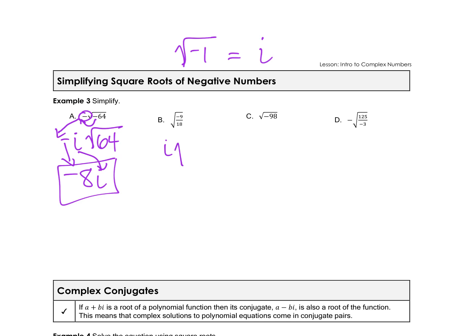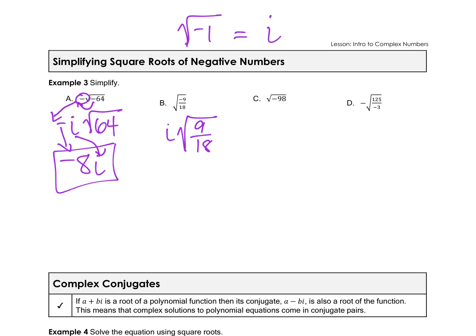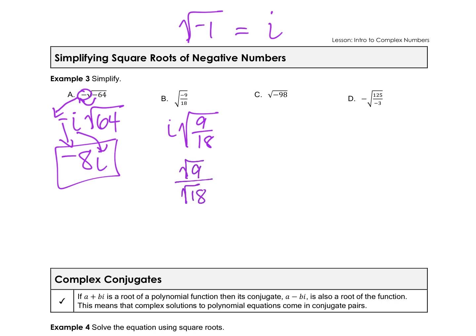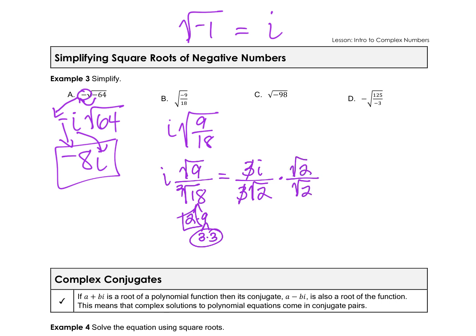For the next example with a fraction, bring out the negative as i. We can split the fraction into the square root of the numerator over the square root of the denominator. The square root of 9 is 3, so we have 3i on top. For the denominator, square root of 18 is not perfect — using a factor tree: 2 times 9, then 3 times 3, giving 3 square root of 2. The 3s cancel, leaving i over square root of 2. Since we can't have a radical in the denominator, we rationalize by multiplying by square root of 2 over square root of 2, giving i square root of 2 over 2.